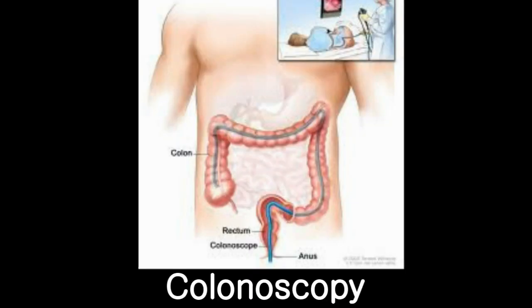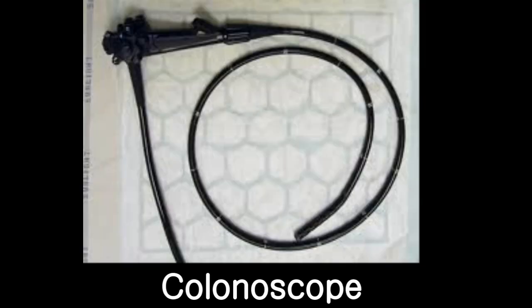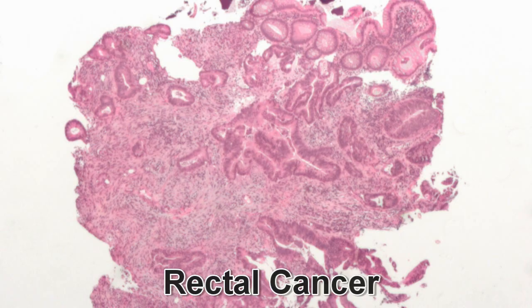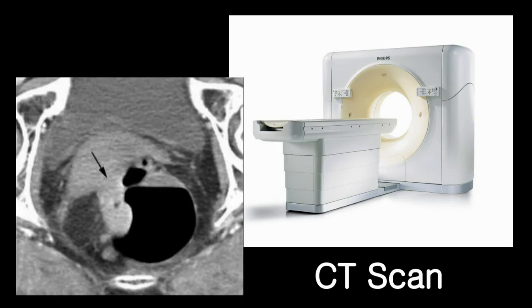The diagnosis of rectal cancer usually involves colonoscopy, an examination of the colon using an instrument called a colonoscope that enables an evaluation of the entire lining of the colon, including the rectum. Once the diagnosis of cancer is made, the extent of the disease is often determined using a radiologic examination called a CAT scan.